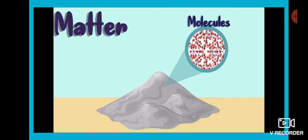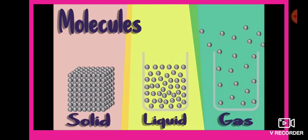Matter is made up of molecules. Molecules play a very important role in matter. You can see the difference in the picture — solid, liquid, and gaseous — how the molecular arrangements take place in each state.